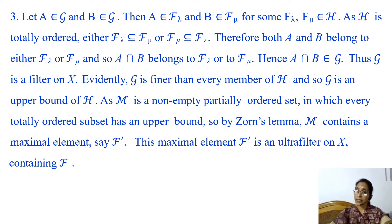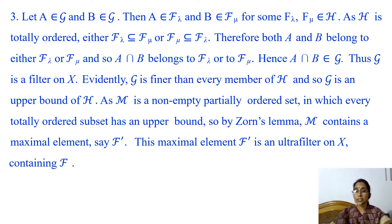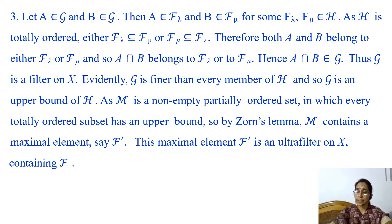Evidently, G is finer than every member of H, because G is the union of all members of H, so G contains every member of H, making G an upper bound of H. As M is a non-empty partially ordered set in which every totally ordered subset has an upper bound, by Zorn's lemma, M contains a maximal element. Recall that Zorn's lemma states that if every totally ordered subset of a non-empty partially ordered set has an upper bound, then that partially ordered set contains a maximal element.